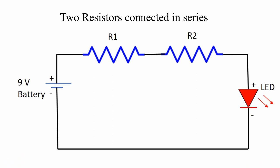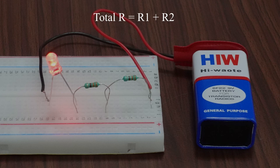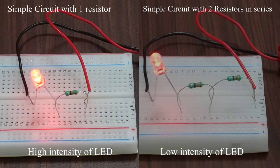If we connect two resistors in series, we see that the intensity of the LED is going to decrease. As per Ohm's law, if the resistance increases, current decreases, so the light intensity of the LED decreases.